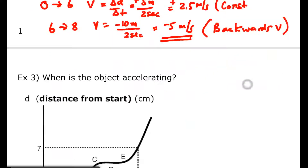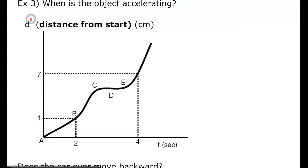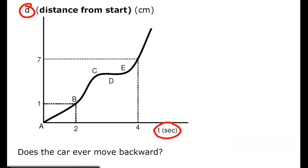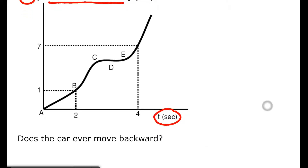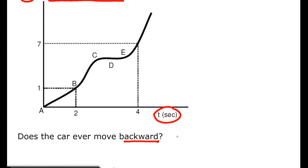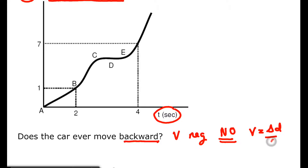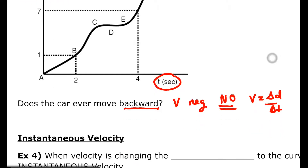Now, when is the object accelerating? This new D versus T plot shows distance from start, which is essentially displacement. Does the car ever move backwards? The velocity would have to be negative for that. Velocity is delta D over delta T, and the delta D over delta T is never negative here. So this object never moves backwards.